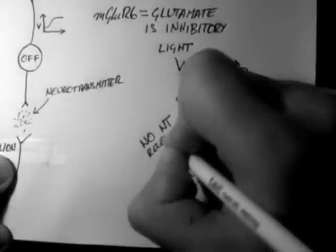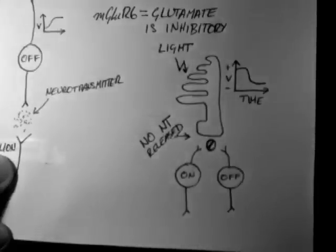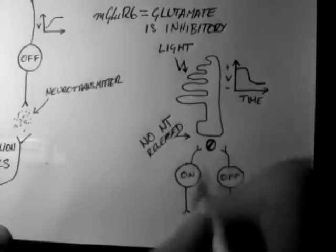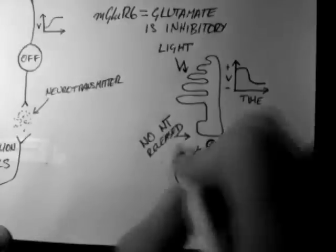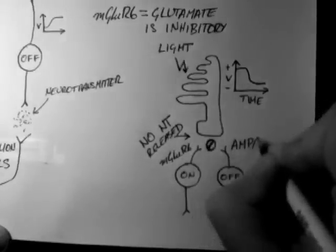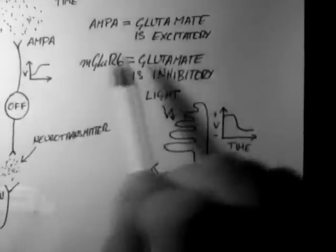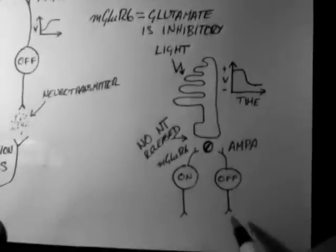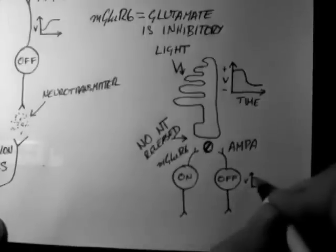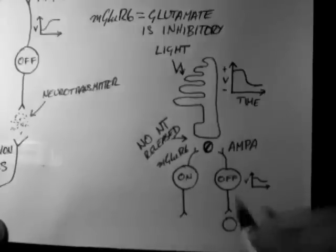Let's look at what happens to the bipolar cells. Remember that AMPA is excitatory. So if there's no glutamate, it will become less positive, and therefore it will not release neurotransmitter.